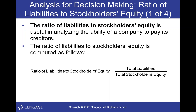This first one is where we just take the total liabilities and we divide it by the total stockholders' equity. That will give us a ratio, or a relationship — that's what ratio means — between those two figures. Assets equal liabilities plus equity.